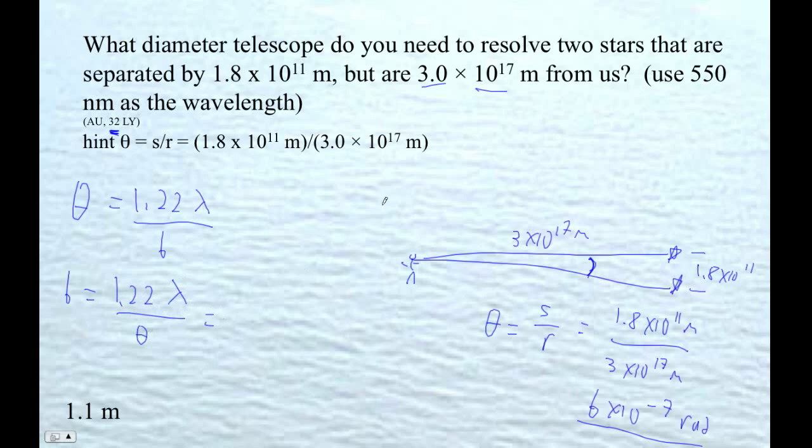That's going to be 1.22 times 550 E-9 divided by 6 times 10 to the minus 7th radians. Let's figure it out: 1.22 times 550 E-9 divided by the answer I just got.